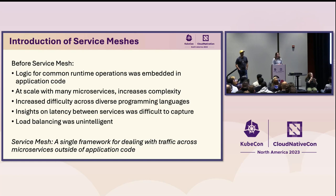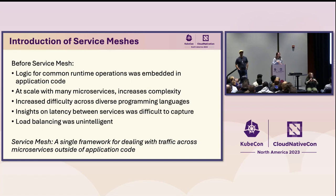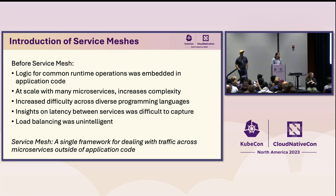That 'no application code changes' part is really important, because that's essentially how people did it before service meshes. Before service meshes, we had to embed all the logic for common retry-type operations in the application code, and then had to do it in multiple programming languages as microservices grew. This process was entirely too time consuming, really difficult, and had a lot of limitations. With service mesh, we have a single framework for dealing with traffic across microservices outside of the application code.